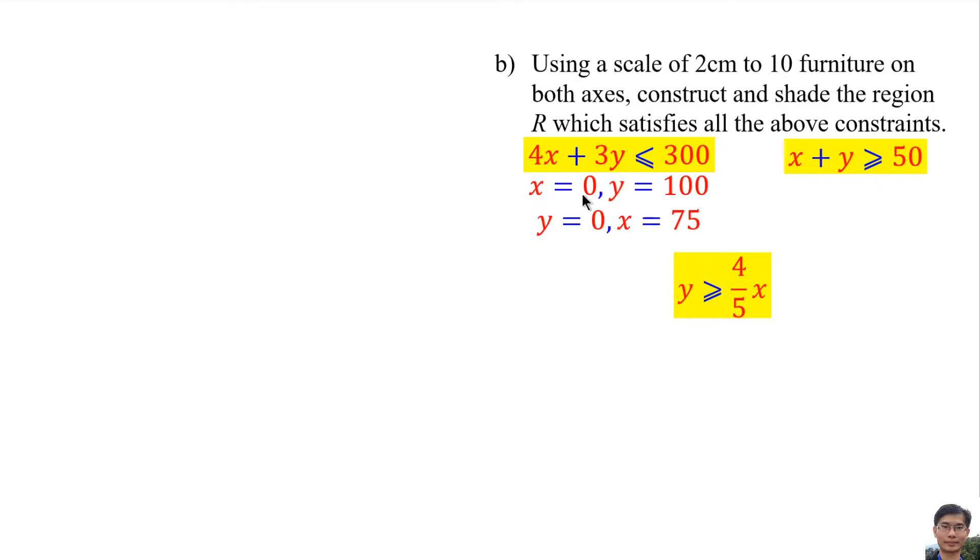When X is 0, Y is 100. And when Y is 0, X is 75. When X is 0, Y is 50, and when X is 50, Y is 50. And when X is 50, Y is 40.